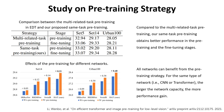We further study the pre-training strategy in our work. We compare the multi-related task pre-training proposed in EDT with the same-task pre-training in our method. Compared to multi-related task pre-training, our same-task pre-training obtains better performance in both the pre-training and fine-tuning stages. Additionally, all networks benefit from the pre-training strategy, and for the same type of network, the larger the network capacity, the greater the performance gain. This shows the effectiveness and superiority of our pre-training strategy.